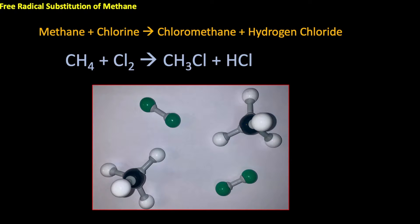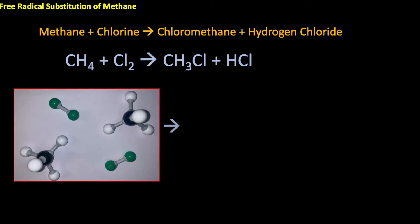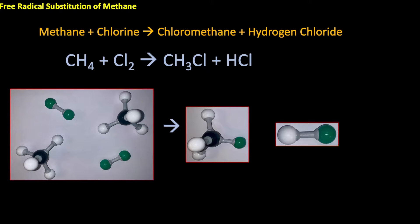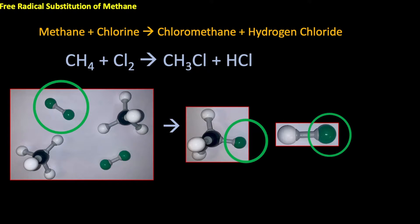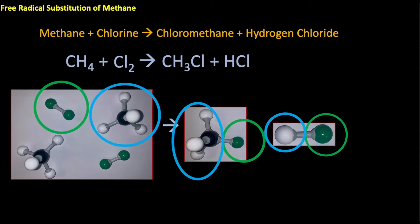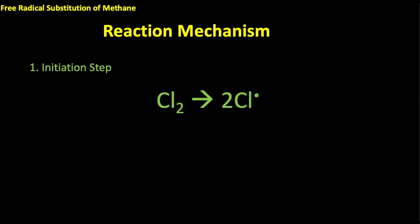In theory, to make chloromethane and hydrogen chloride, we could just take one chlorine molecule and one methane molecule to give us the products — but is that actually what happens? We can look at a reaction mechanism to work out how our atoms rearrange themselves from the reactants to make our products.